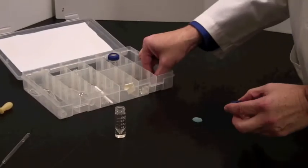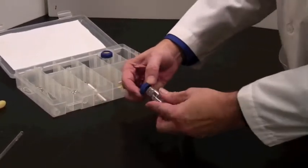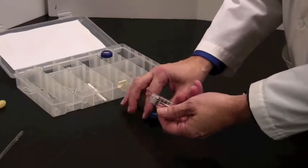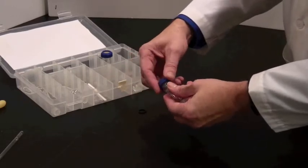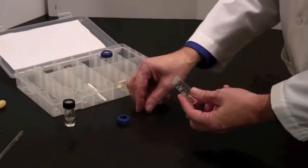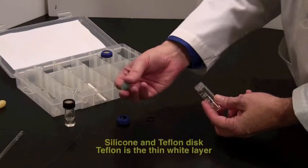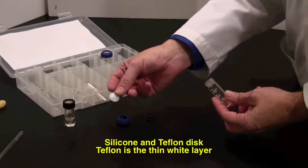The vials have various ways of being closed. There is a thread on the outside and a threaded ring. This one happens to be blue. There are also black ones. There is an o-ring, and there is a silicone and teflon disc.